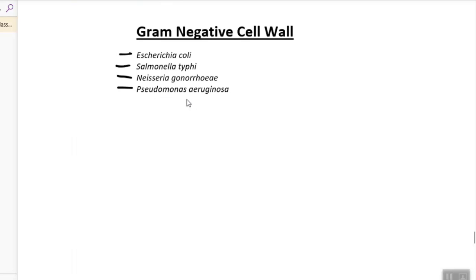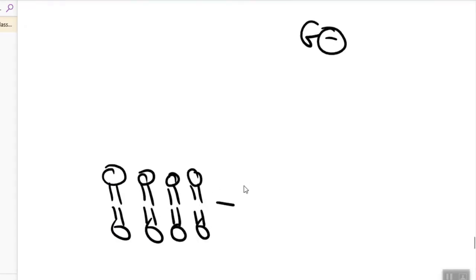Now the gram-negative is a little bit more complicated. Again, here we have the cell membrane, the phospholipid bilayer. So we're talking about gram-negative now. Phospholipid bilayer. Again, this is the inside of the cell.